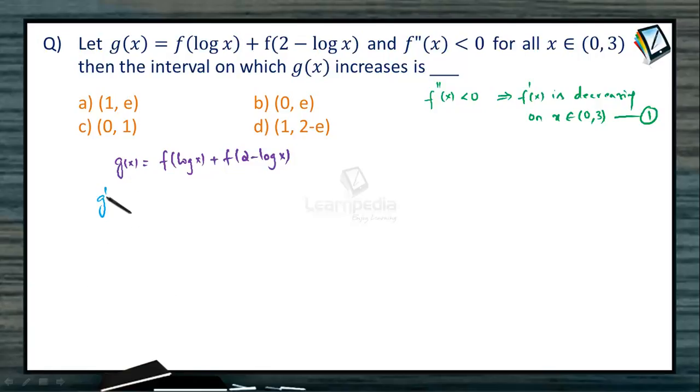To identify monotonicity, let us calculate g'(x). g'(x) will be the derivative of f(log x): f'(log x) times 1/x, minus (because there's a minus sign for log x) the derivative of f(2 - log x): f'(2 - log x) times 1/x. This can be clearly expressed as [f'(ln x) - f'(2 - ln x)]/x.